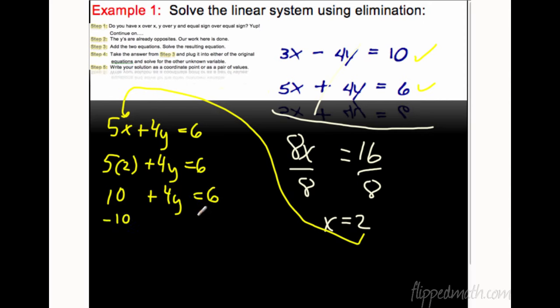Subtracting 10 from each side, we're going to get 4y equals negative 4. And if you divide both sides by 4, you'll get y equals negative 1. So x is positive 2, that always goes first, y is negative 1. Guess what? We just did our first elimination problem. It's that simple.